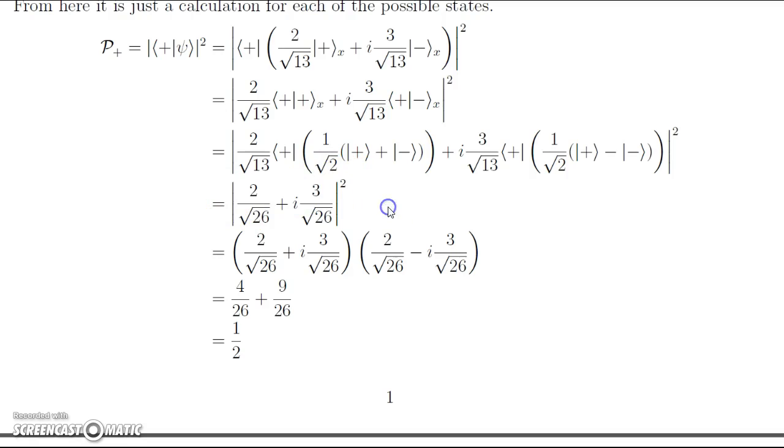Once we go through all the algebra, we're left with this result here, that we have 2 over root 26 plus 3i over root 26 modulus squared. A result we did in the complex analysis lecture is that the modulus squared is just equal to that complex number times the complex number's complex conjugate. Once we have that, it's just a simple product. We get that 4 over 26 plus 9 over 26 is equal to 1 half, which is the probability of measuring spin up.